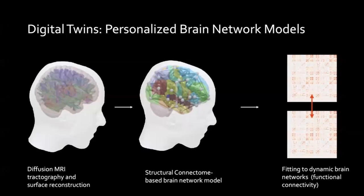We use diffusion MRI tractography to extract structural connectomes — a structural description of the brain network, which is the input for our brain network simulation. We can compute outputs like neural time series, EEG, MEG, fMRI, and functional connectivity matrices, which in their simplest form are region-by-region correlations between brain areas.